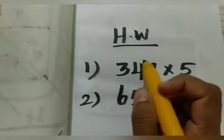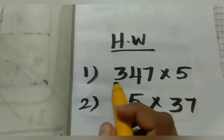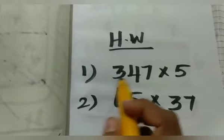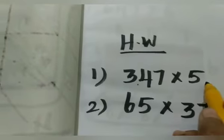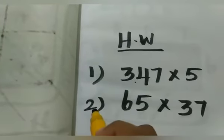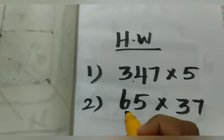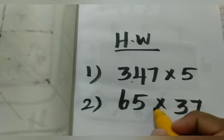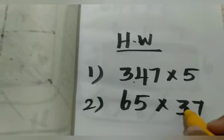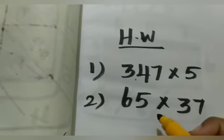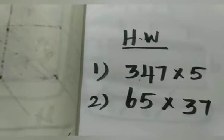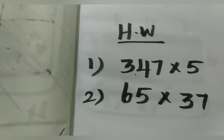Next, homework. First: 347 into 5. Second sum: 65 into 37. Do the sums in your homework notes. Thank you, students.